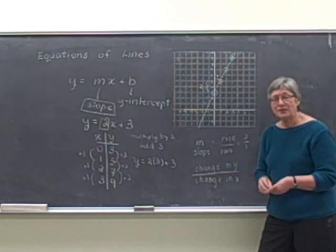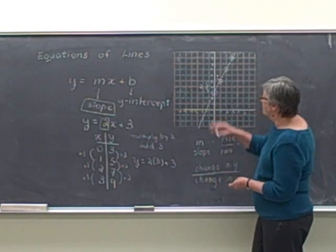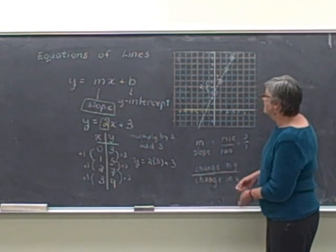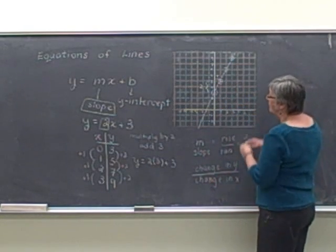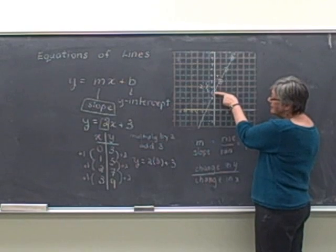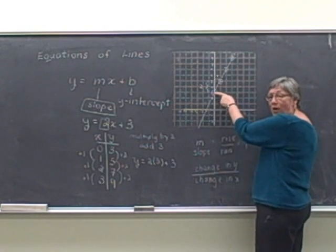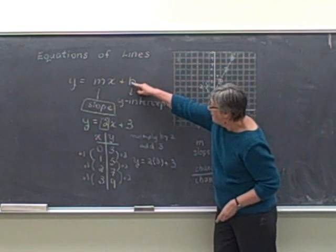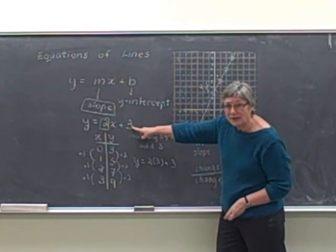Now the y-intercept just means that's the place that we cross the y axis. So if I look at the graph here, we can see that I cross the y axis at the point 0, 3. So we'd say that the y-intercept is 3. And that corresponds to the b in the equation.